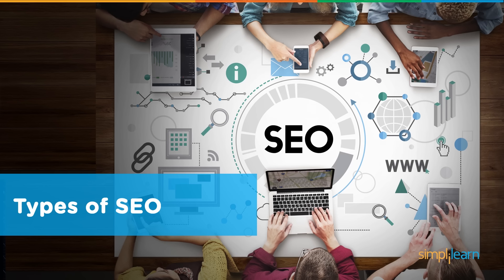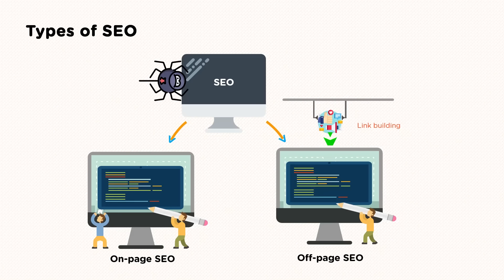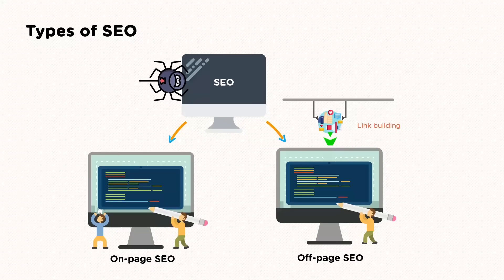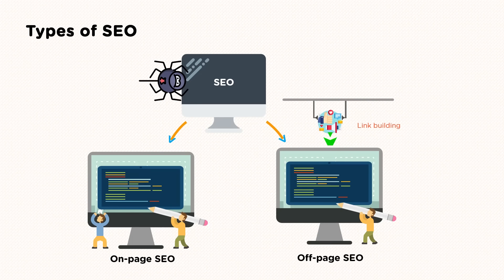If we want our website found on search engines after they've crawled it, we look at it from a two-pronged strategy. The first is on-page SEO — what we do on our website to be relevant for a search engine query. The second is off-page SEO — what we do off our website to be relevant for a search engine query. Off-page SEO is generally synonymous with link building. When you want to rank for a keyword, you'll need to apply both on-page and off-page SEO.